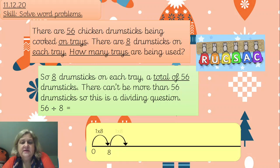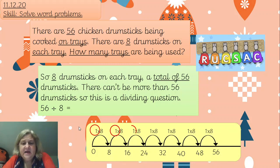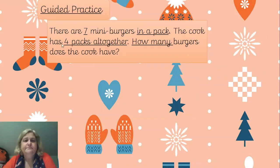We can set it out doing skip jumps on our number line, adding on one times eight each time until we get to that dividend. Don't forget to stop - don't keep carrying on, and don't stop short. Then we count how many jumps we've made: one, two, three, four, five, six, and seven. So our answer is seven. Those numbers are going to be less because we've got 56 chicken drumsticks being put into groups of eight - that's dividing.